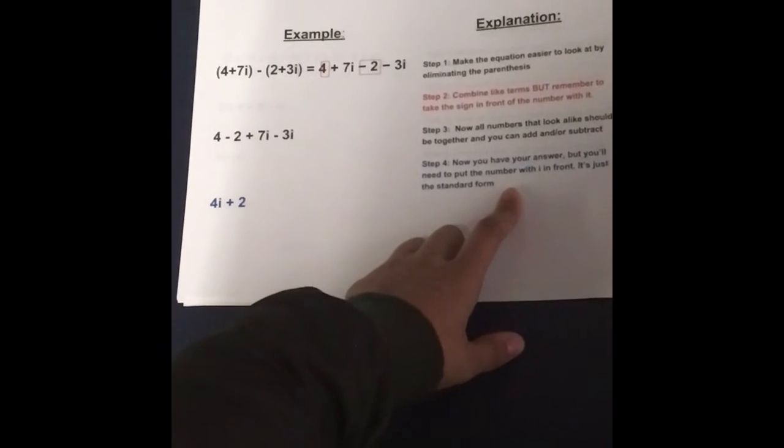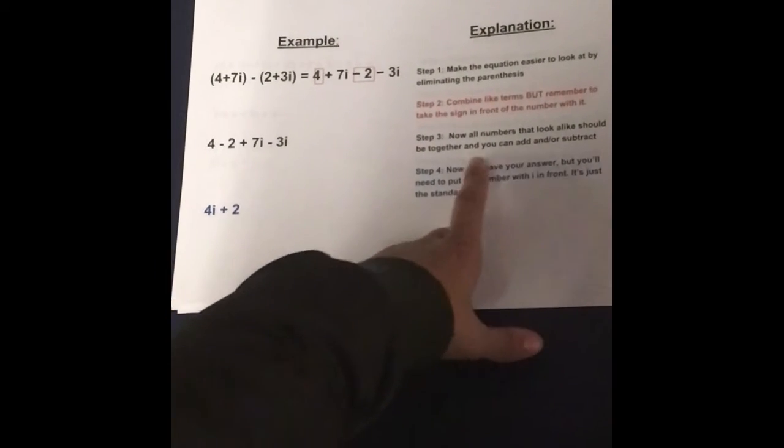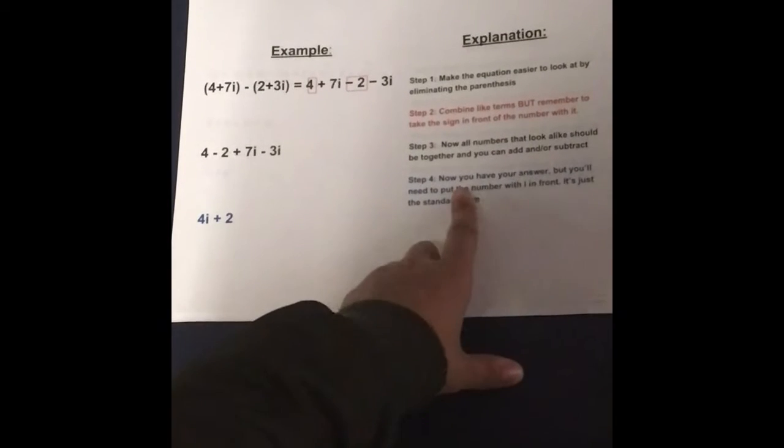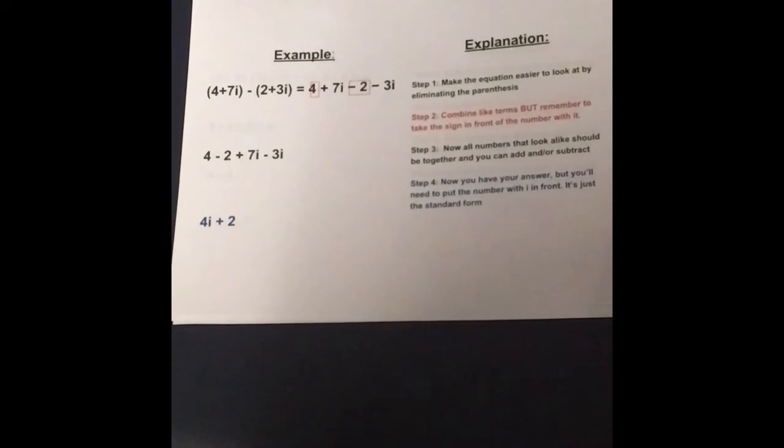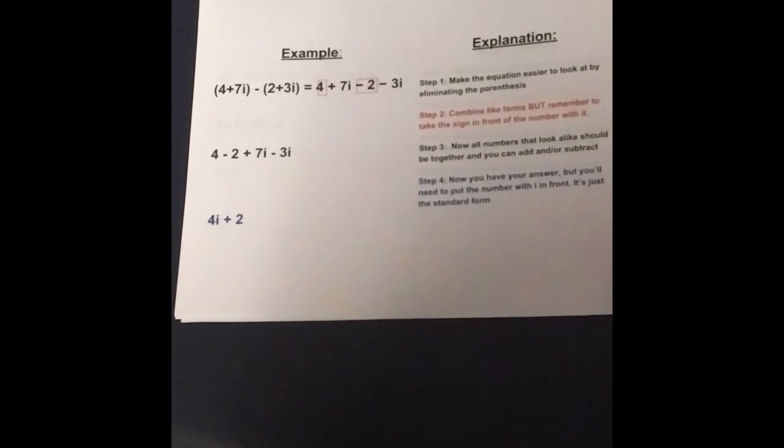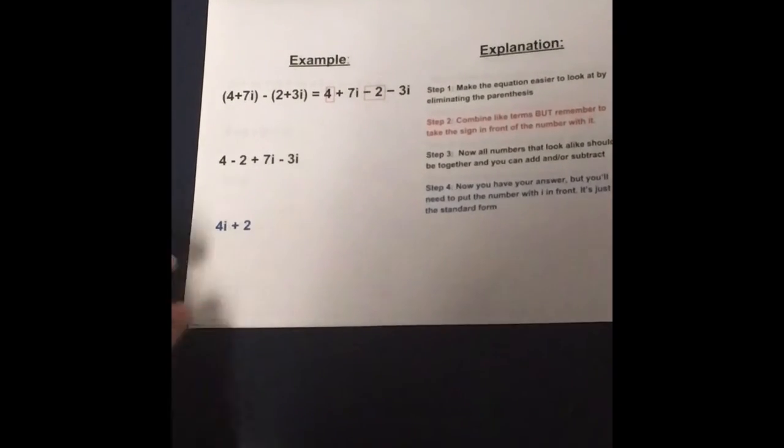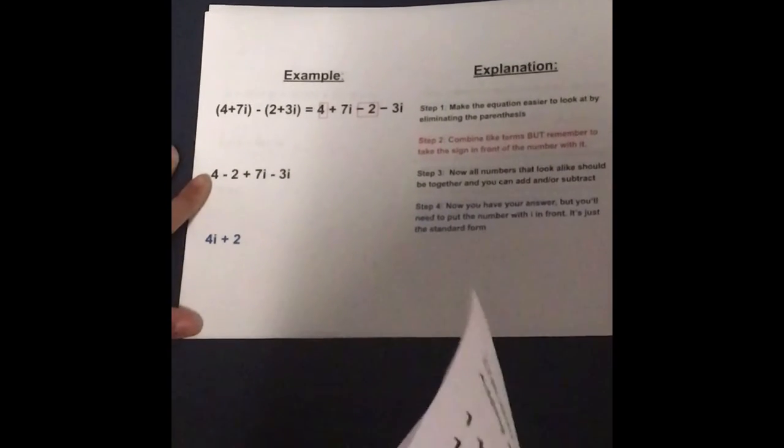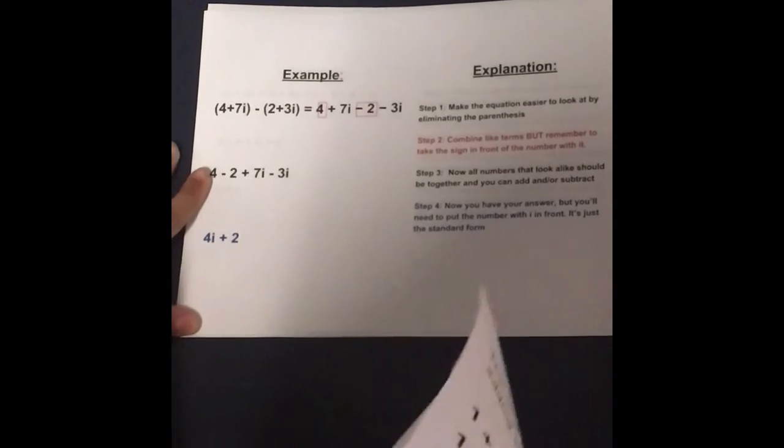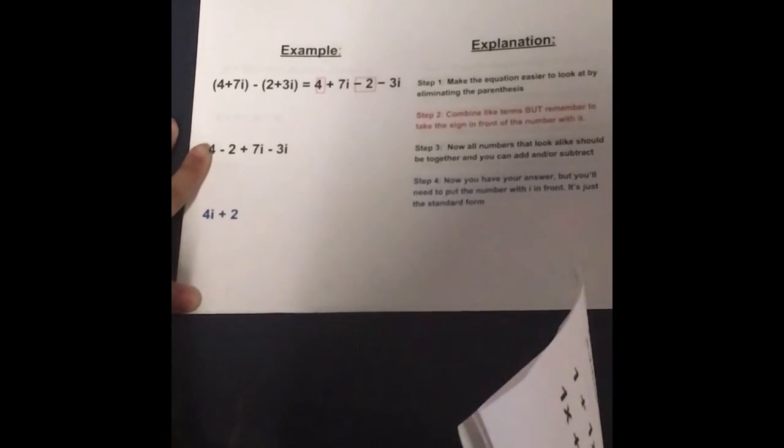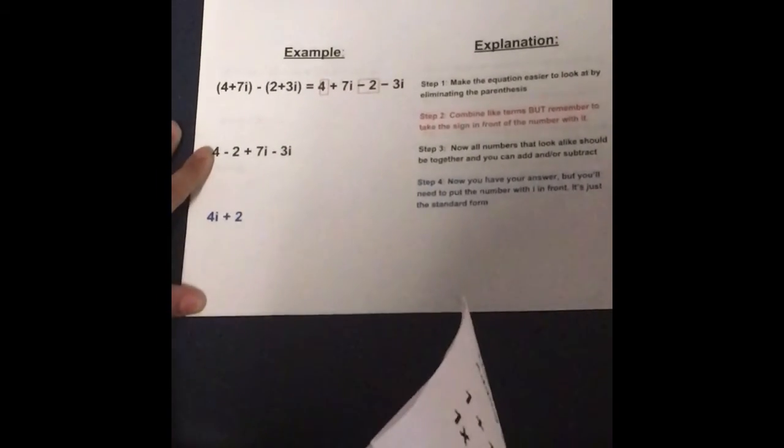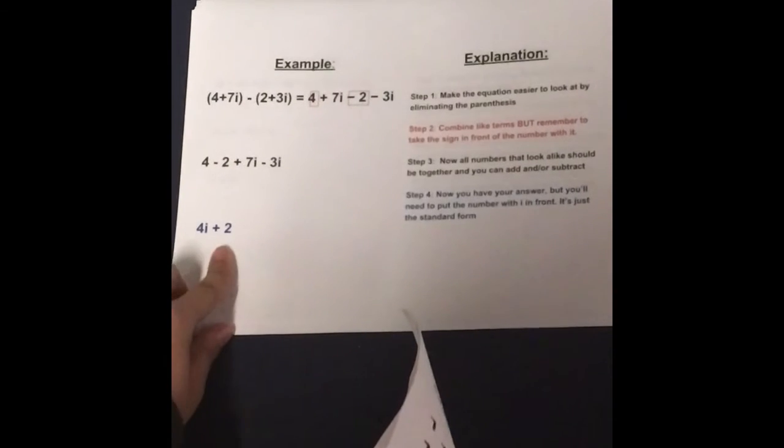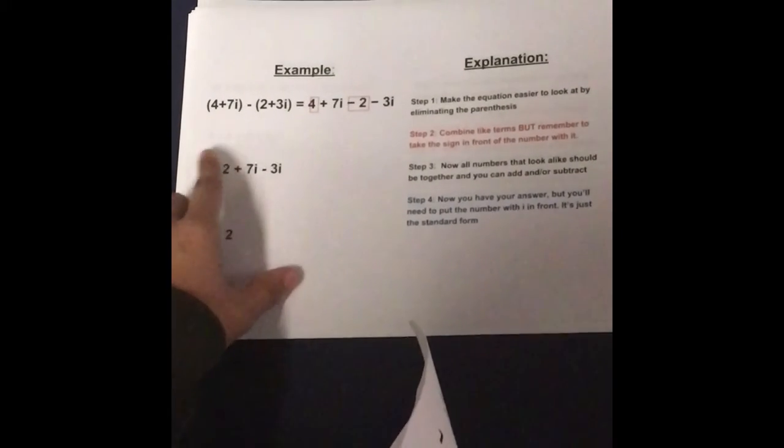Here's your equation summed up. Step three: Now all numbers that look alike should be together, and you can add or subtract. Step four: Now you have your answer, but you'll need to put the number with i in front. It's just the standard form. Here's your answer after combining like terms.